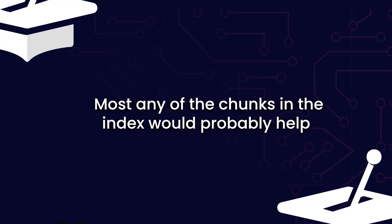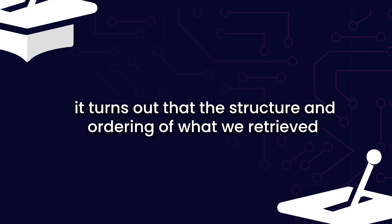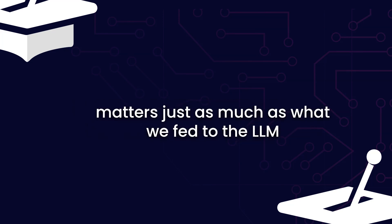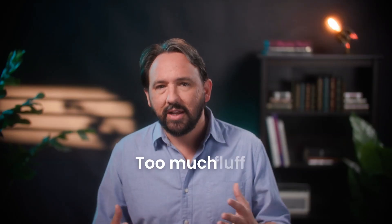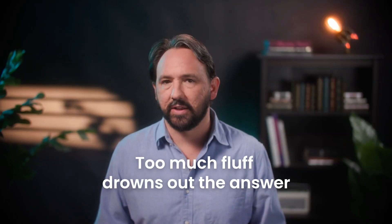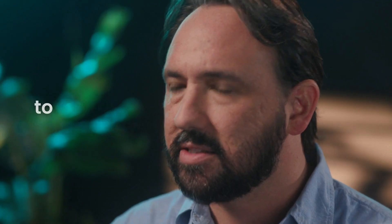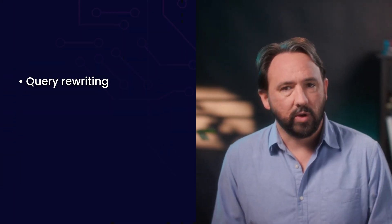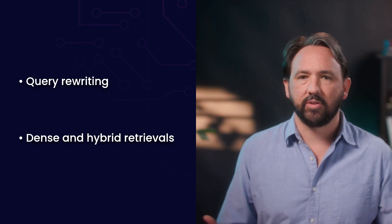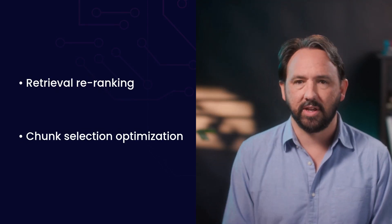Initially, we thought most any of the chunks within the index would probably help, but it turns out that the structure and ordering of what we retrieved matters just as much as what we fed to the LLM. Bringing in too much fluff and you drown out the answer; bring in mismatched data and the LLM hallucinates. So researchers began to ask: what's the optimal way to slice, store, and select the information from the index? This led to a wave of work in query rewriting, dense and hybrid retrievals, retrieval re-ranking, and chunk selection optimization — all trying to answer the same question.